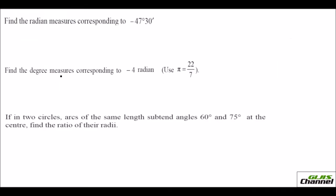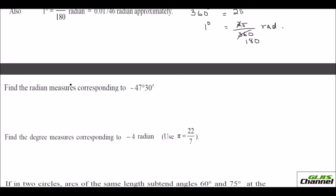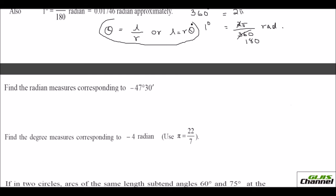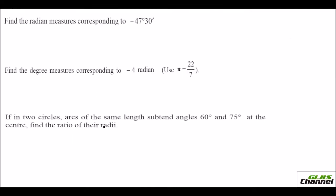Before going to the problems, let me also remind you: when you have equal arcs of circles subtended to equal angles at the center, your theta equals L over R, or you can also say L equals R times theta. Just remember this because we apply it in the problems. Let us solve these 3 problems.